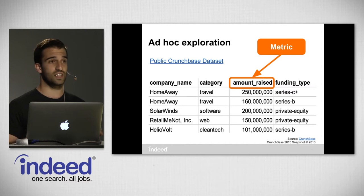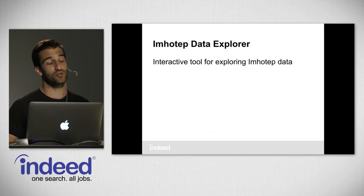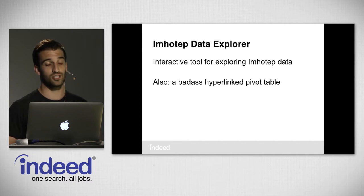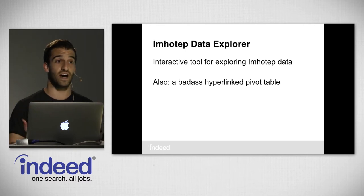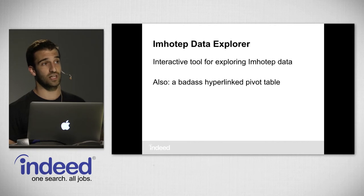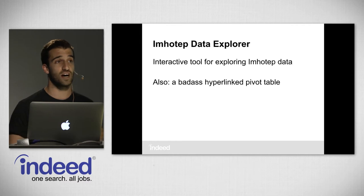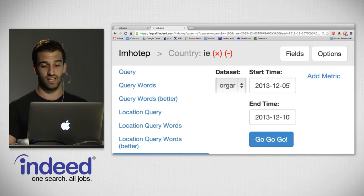We're going to look at this data inside of what's called Imhotep Data Explorer. You can think of Imhotep Data Explorer as an interactive tool for exploring Imhotep data — or just a badass hyperlinked pivot table. The hyperlinks are on the fields and on the values. When you click on a hyperlink on a field, it does an interactive group-by or pivot on that field. When you click on a value, it does a filter. Let's dive in.